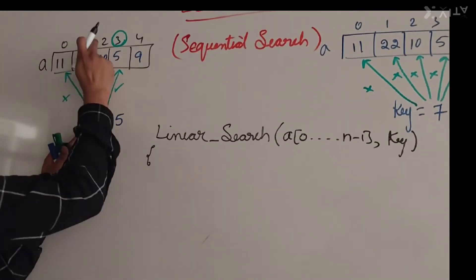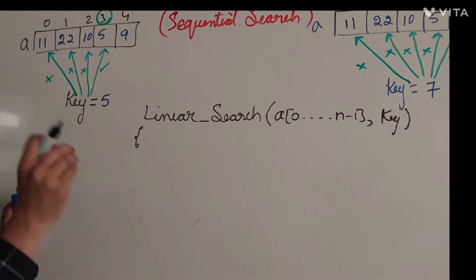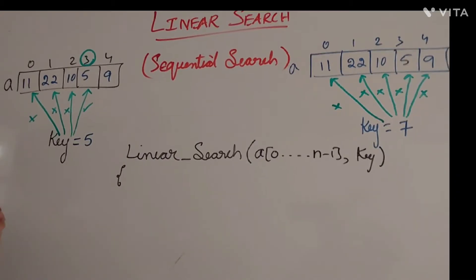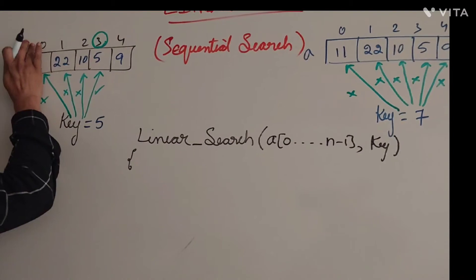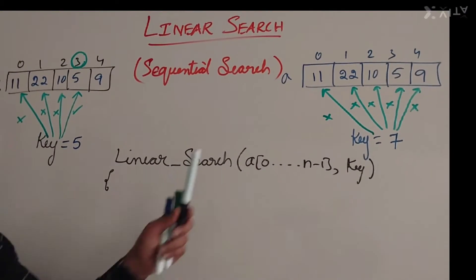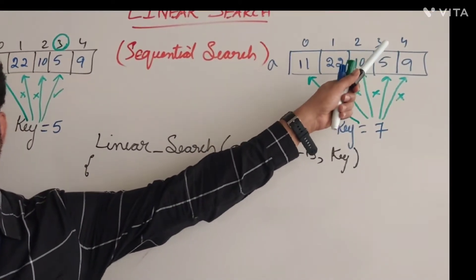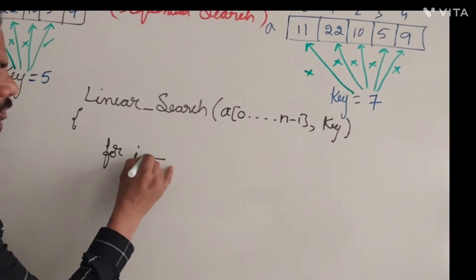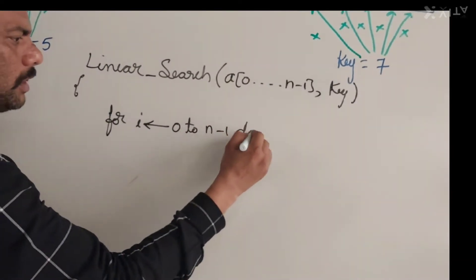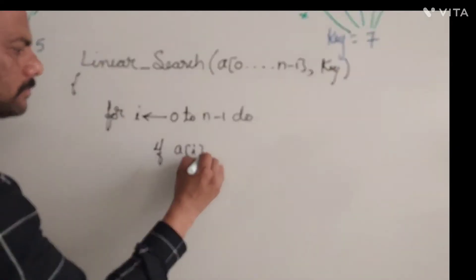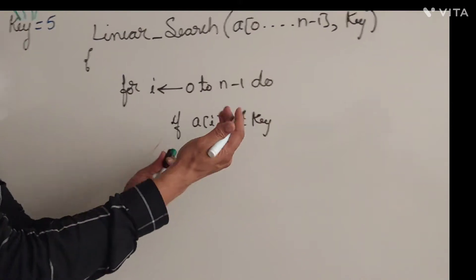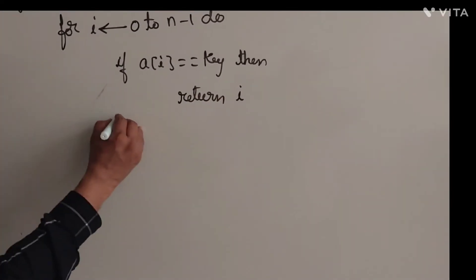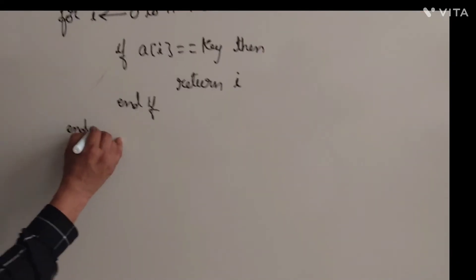We repeat the comparison operation — comparing key with a[0], a[1], a[2], and so on — so we use a loop. We use a for loop because we know from what position to what last position we need to search. At worst case we search from position zero to n minus one. So: for i from zero to n minus one, if a[i] is equal to key, then return i (the position where we found it). End if.